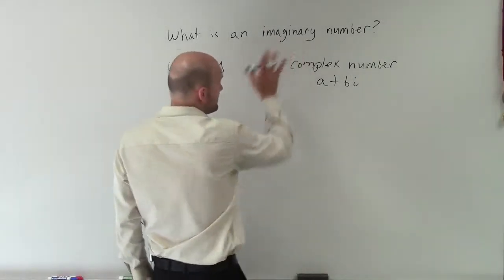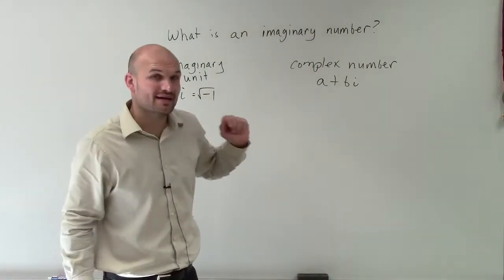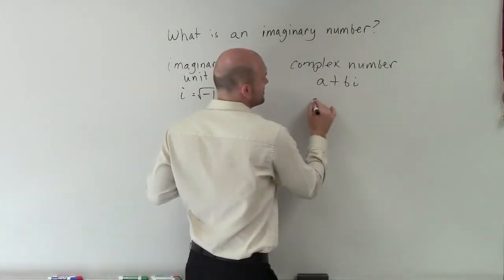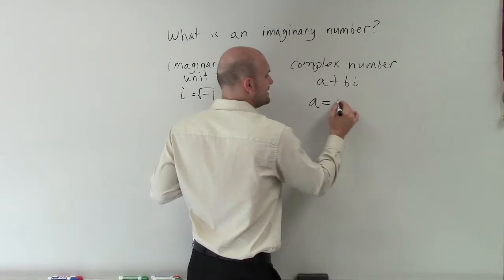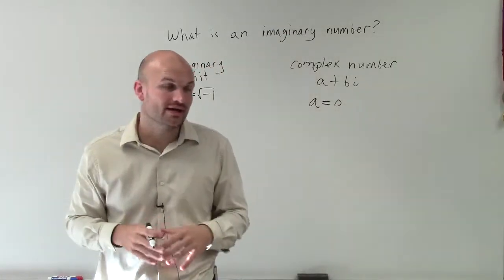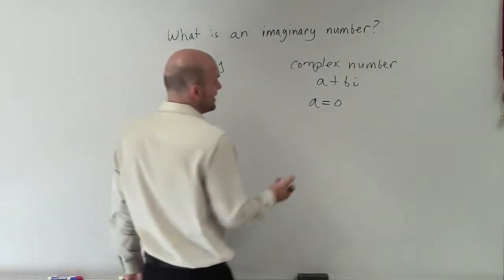Now, an imaginary number is going to be a complex number, but it's going to be a complex number when a equals 0. So therefore, that can come into any form.